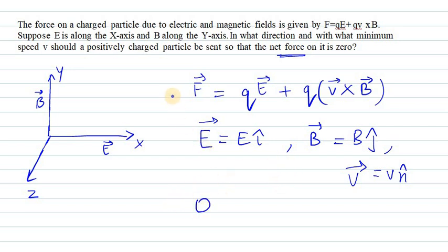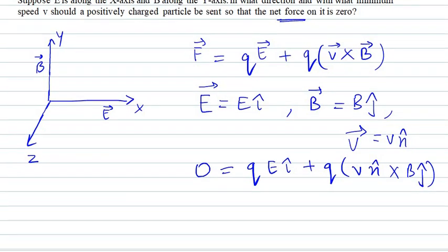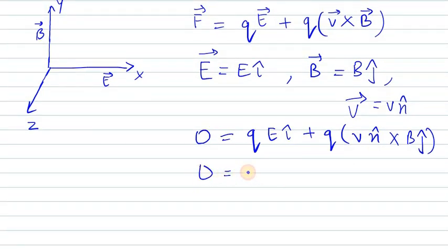Force can be considered as zero. So F = 0 = q[E î + (v n̂) × (B ĵ)]. Now we need to solve this further.